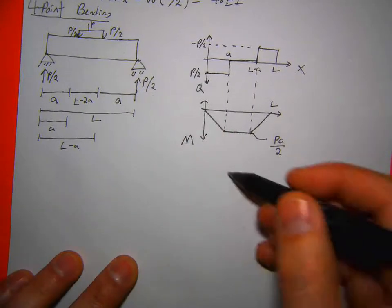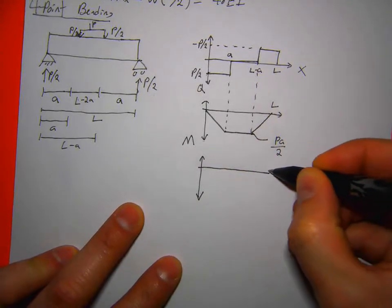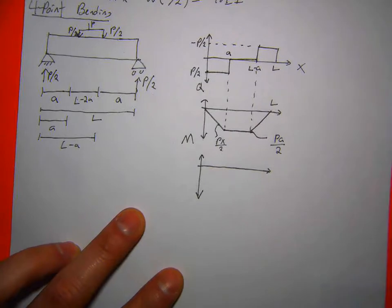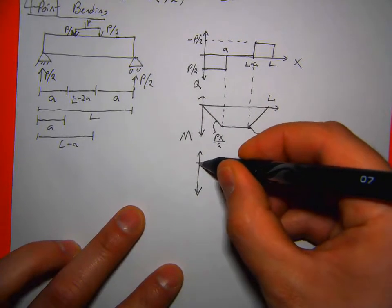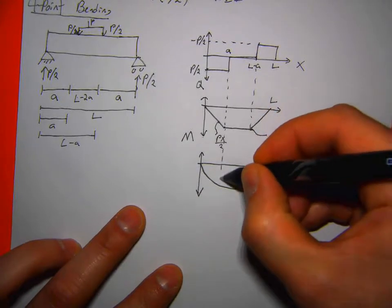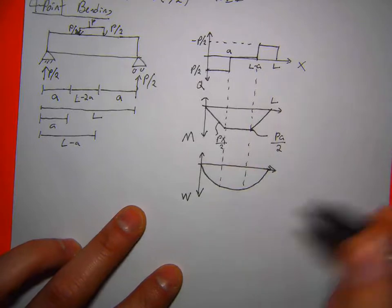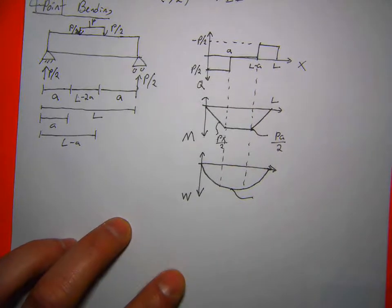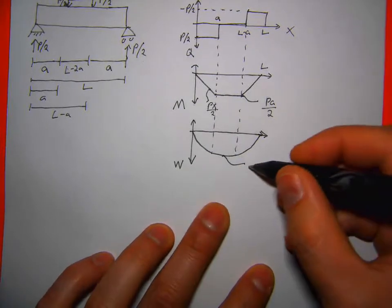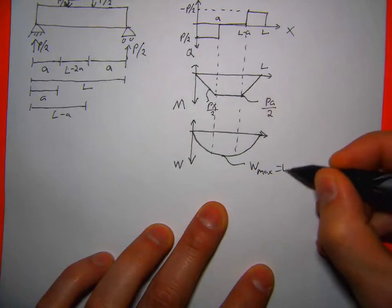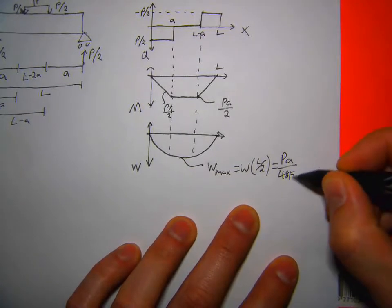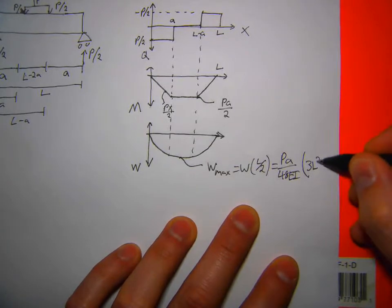So I'm kind of just spreading it out. The deflection for this is a slightly different shape than before — still piecewise but continuous. I have the piecewise equation in the notes. The maximum deflection happens at the midpoint: W(L/2) = PA/(48EI) × (3L² − 4A²).